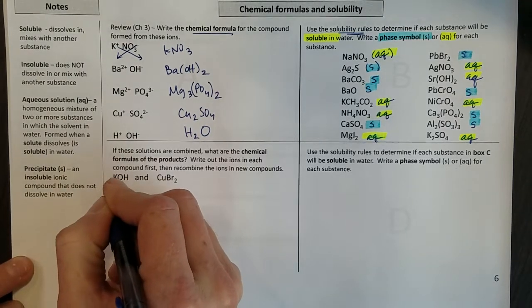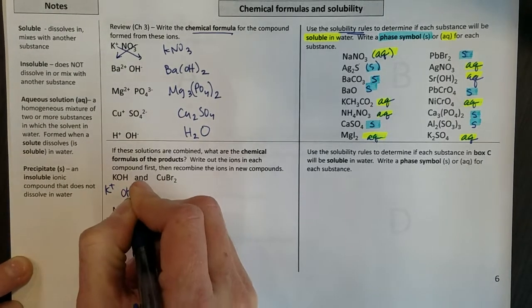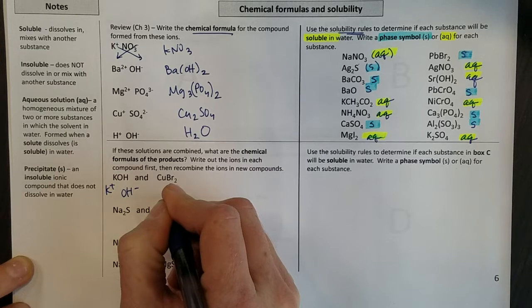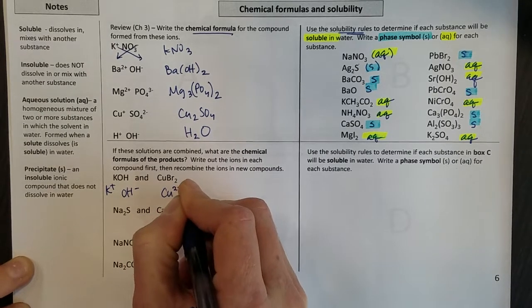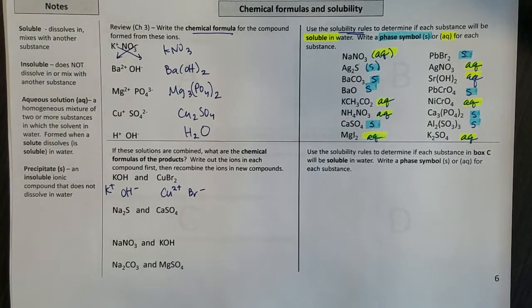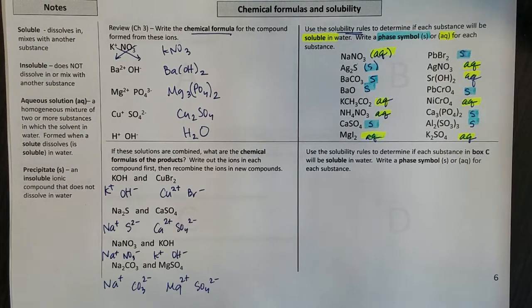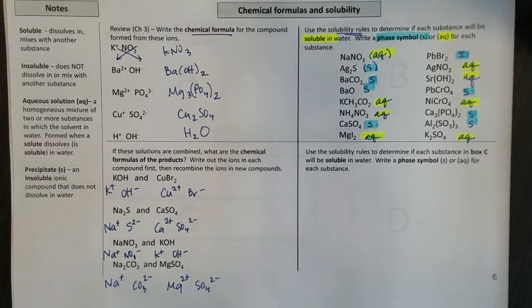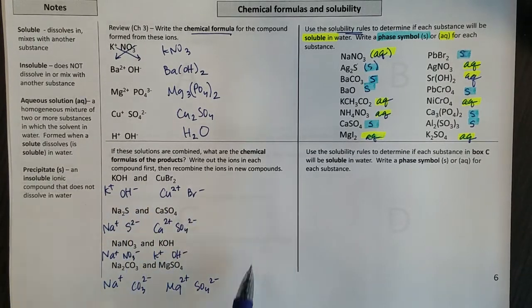KOH, this is a good review from chapter three, break it back into ions. Cu must be two plus to go with Br minus. So I'm going to write down the ions for all of those. So go ahead and do that and then catch back up with me. So you should have something that looks like this now.